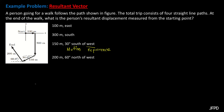To solve for the resultant of a vector, first we need to draw all the given vectors in a single Cartesian plane. This is a concurrent vector wherein all the tails of the vectors are drawn from the origin.